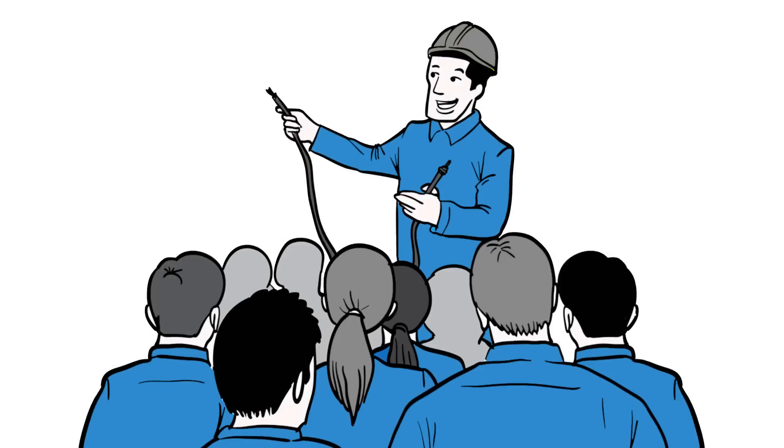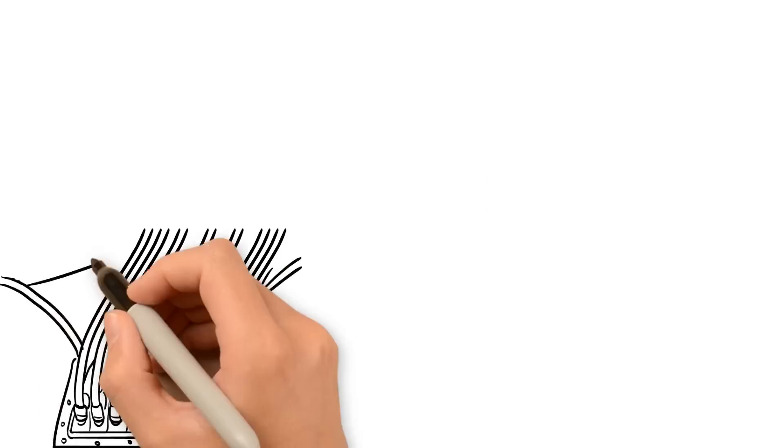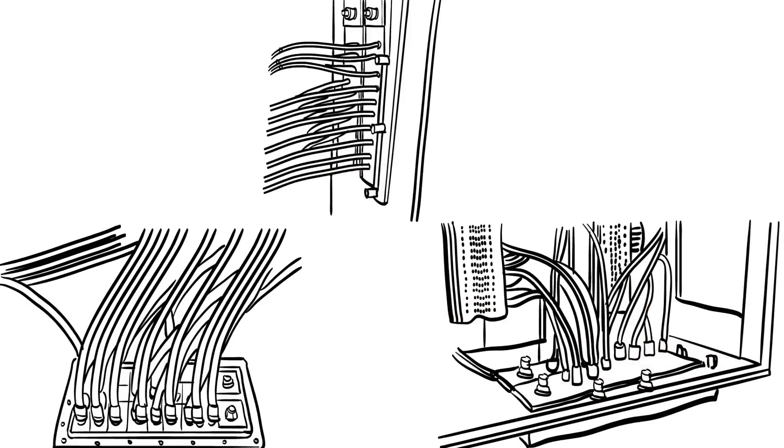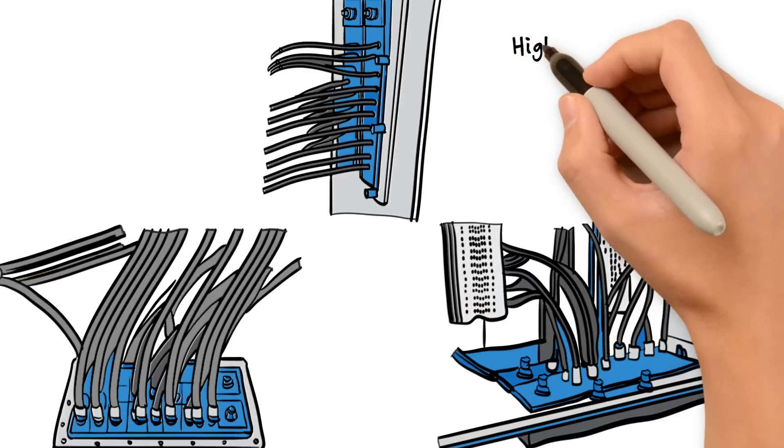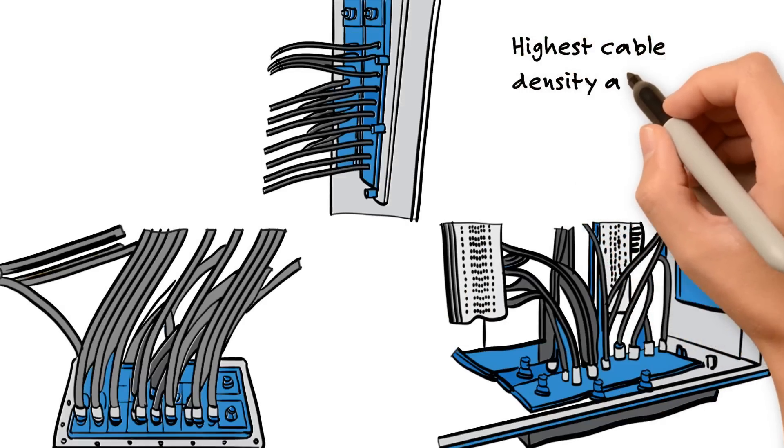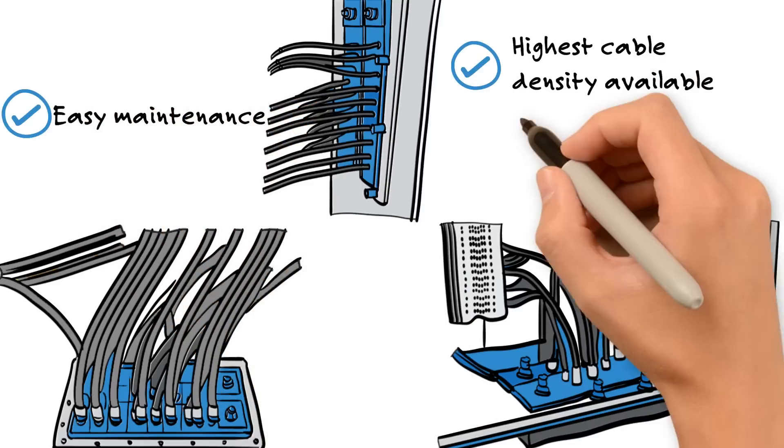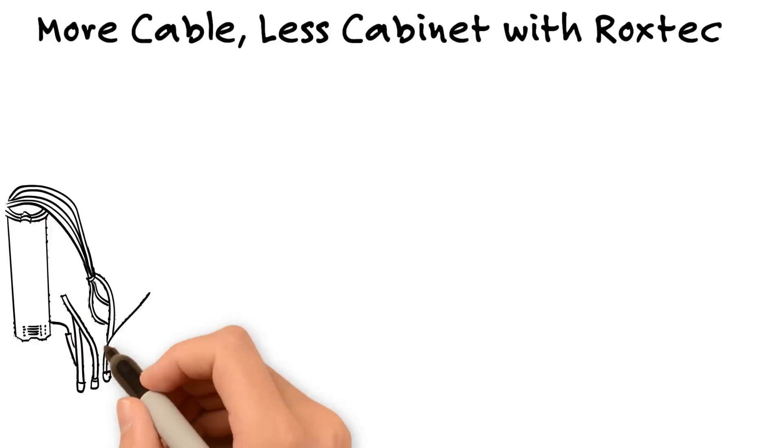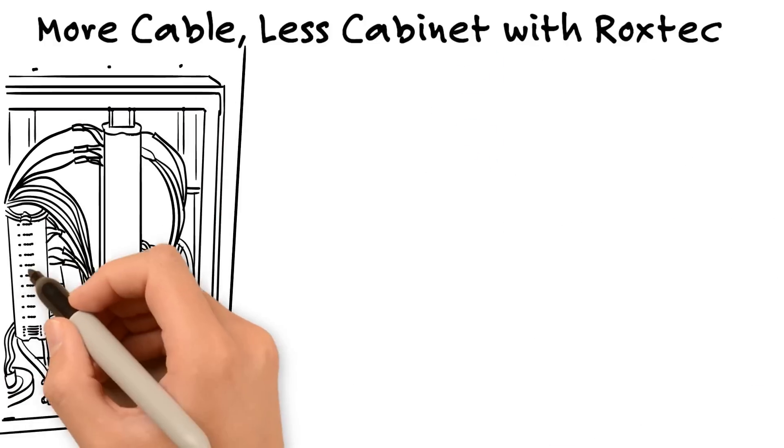Roxtech offers an approved alternative to cable glands. It's perfect for high densities and high quantities of cables. Roxtech cable entry systems accommodate the highest cable densities on the market, with designs that allow for simple maintenance in future expansion. Quite simply, Roxtech allows for more cable and less cabinet.